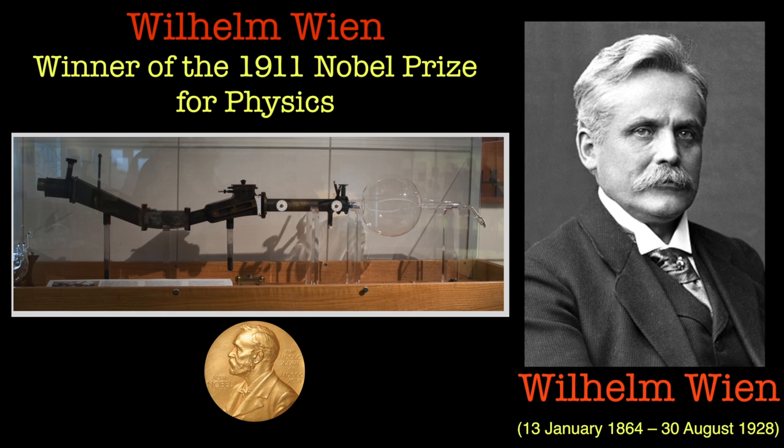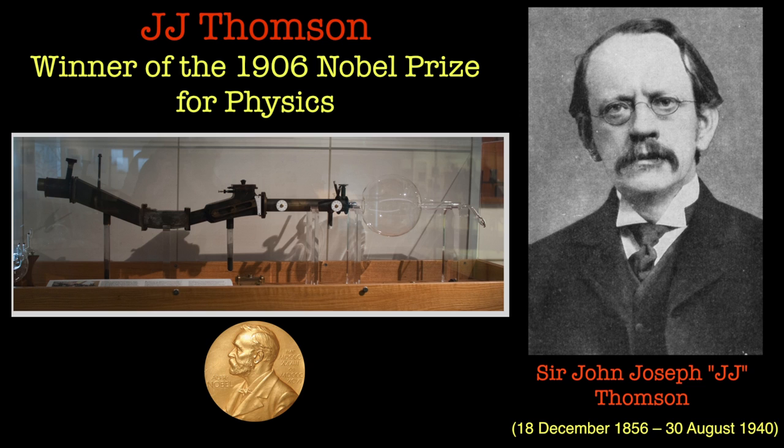Historically, Wilhelm Wien constructed a device based on a cathode ray tube in 1899 with an electric and magnetic field to deflect the positively charged particles and separate them according to the mass and charge ratio. But it was JJ Thompson, the guy who discovered the electron, who optimized the techniques in a better way by using a vacuum chamber, giving us essentially the first ever mass spectrometer.